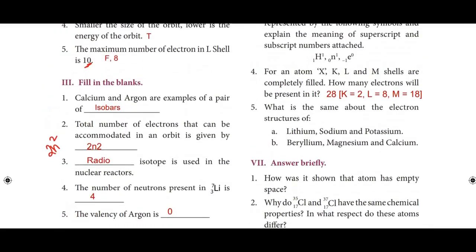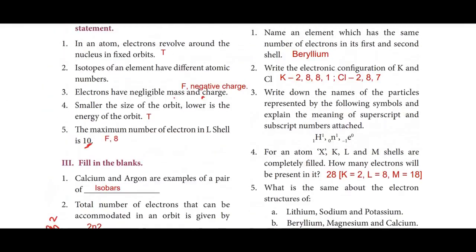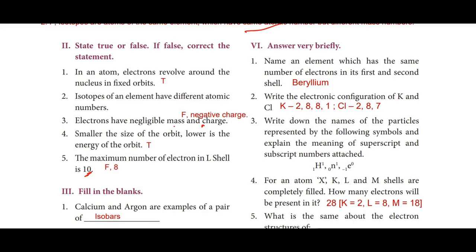Section 6: Answer very briefly. First: Name an element which has the same number of electrons in its first and second shell. The answer is Beryllium, atomic number 4, with electronic configuration 2, 2 — so the first shell and second shell have the same number of electrons.